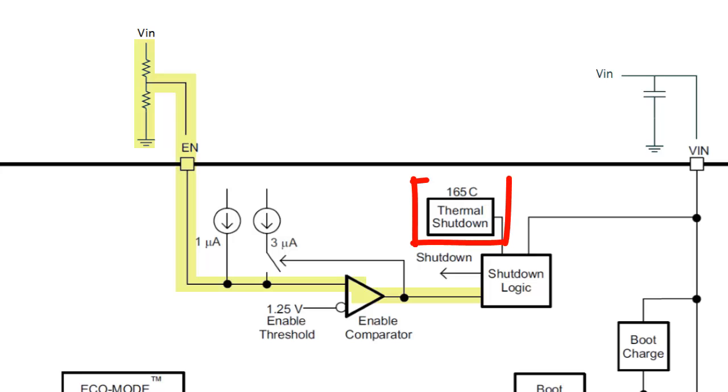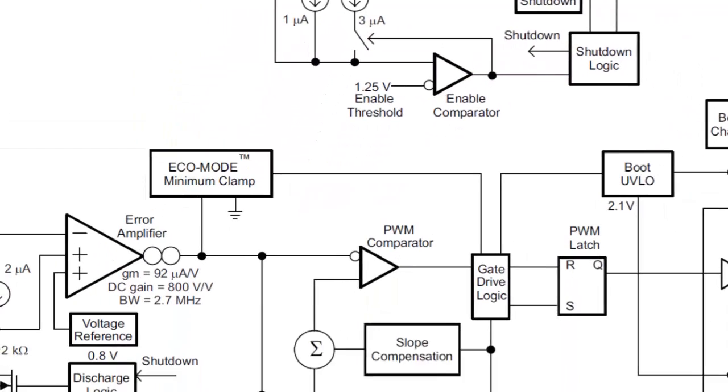The TPS54232 achieves higher efficiency during low current loads by utilizing a pulse skipping eco mode. During a light load, the output of the error amplifier will drop. When it drops to 0.5 volts, it is clamped and FET switching is disabled.